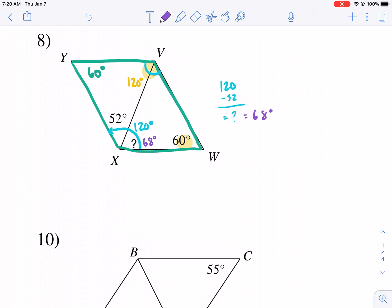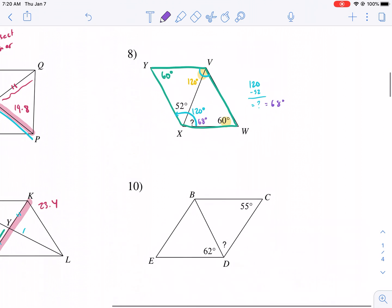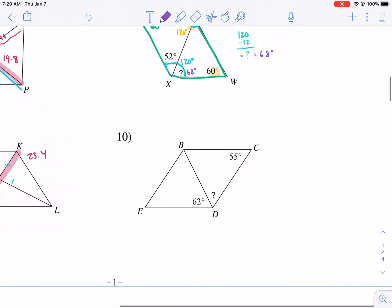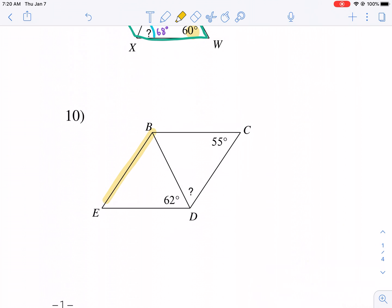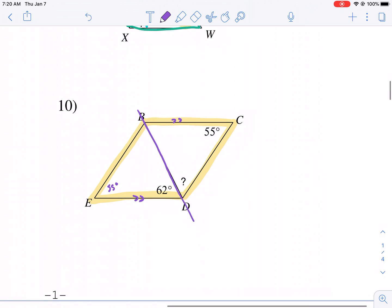So this question mark is going to be equal to 68 degrees. That's the best way to do this using the properties of parallelograms. You can also use transversals and the like, and that will be also fairly easy. But that's how you do it using that method. Let me show you a quick another method for number 10.